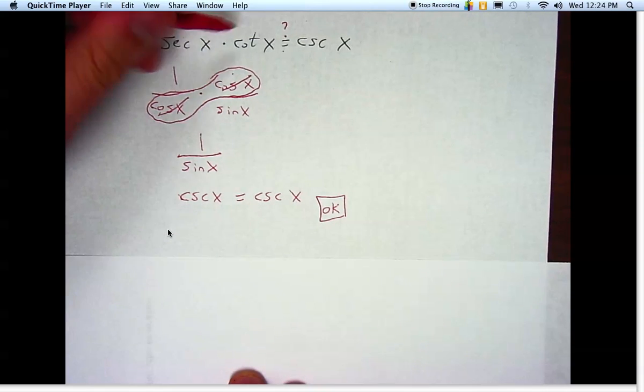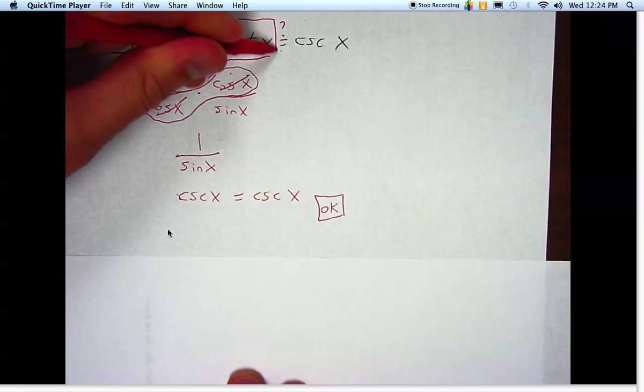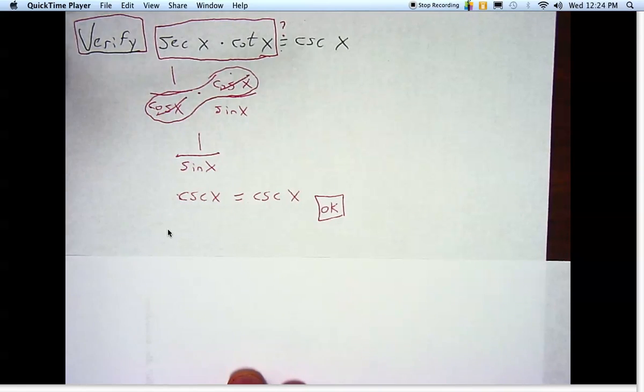So this is an example where this is not a super complicated expression, but it's fairly complicated. And we can simplify it a little bit. It's a lot easier to work with plain old cosecant as opposed to secant times cotangent. So we have verified a trig identity.